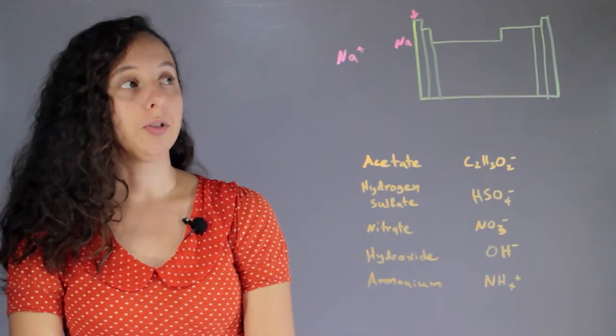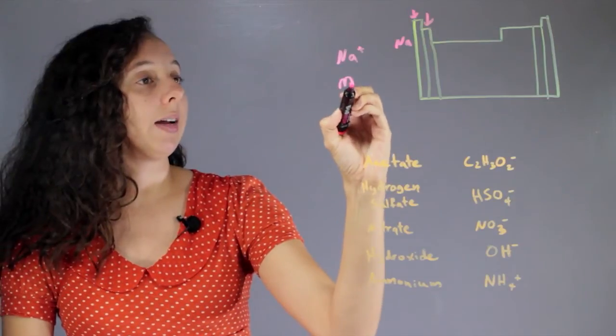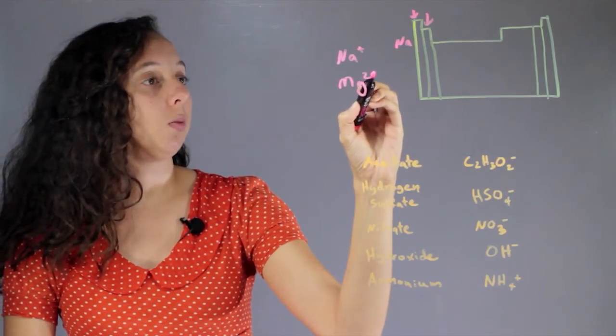Same thing goes for the second row, second column. So for instance, magnesium will always be two plus.